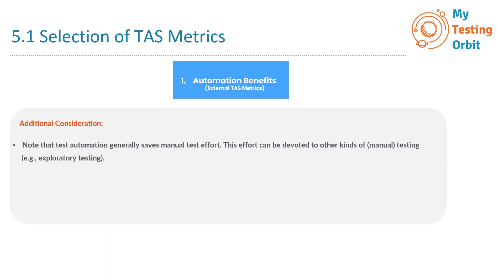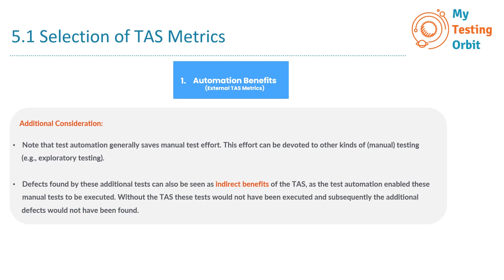An additional consideration: test automation generally saves manual test effort, and this freed effort can be devoted to other kinds of manual testing, such as exploratory testing. Defects found by these additional manual tests can also be seen as indirect benefits of the TAS, as the automation enabled those manual tests to be executed. Without the TAS, these tests would not have been executed and the additional defects would not have been found.